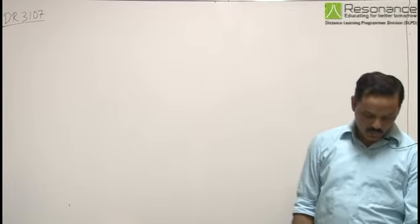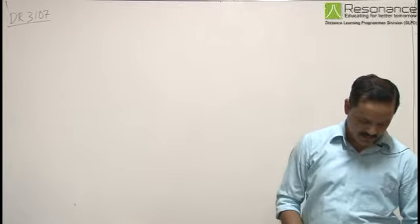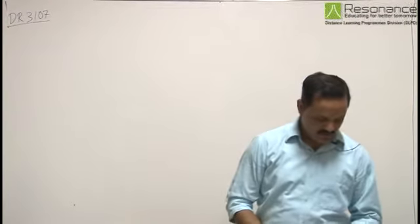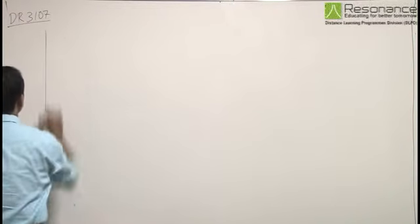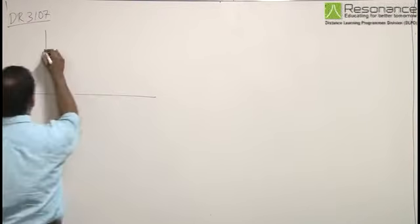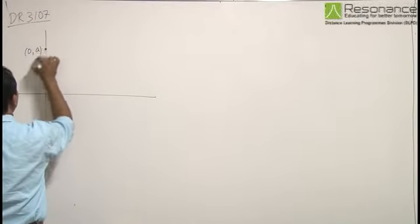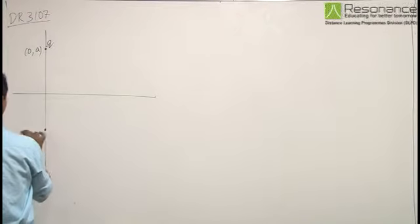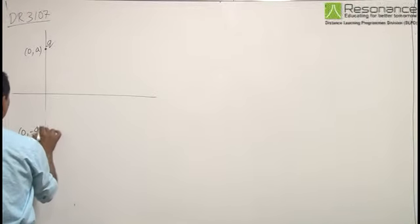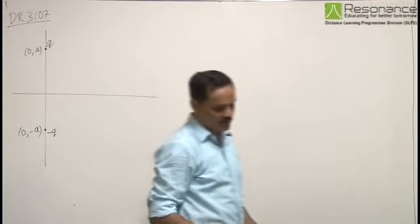In the given question, there are two equal negative charges minus q, which are fixed at points (0, a) and (0, minus a) on the y-axis. So we have two charges: one at (0, a), this is charge minus q, and the other at (0, minus a), there is another charge minus q.